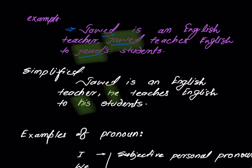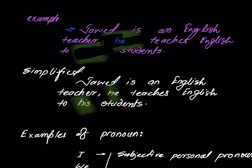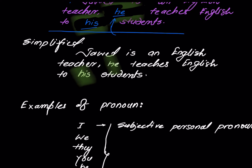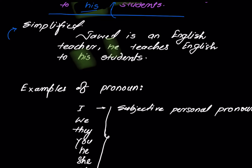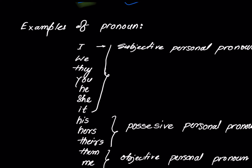Javed teaches English to Javed's students. Here, Javed is repeated — Javed, Javed, Javed — how many times? It's irritating. Pronoun eliminates that repetition and takes its place. So: 'Javed is an English teacher. He teaches English to his students.' Same meaning, but the words change. Javed is a noun; 'he' is a pronoun.